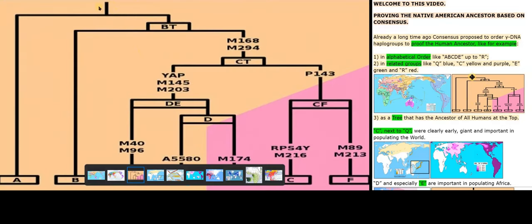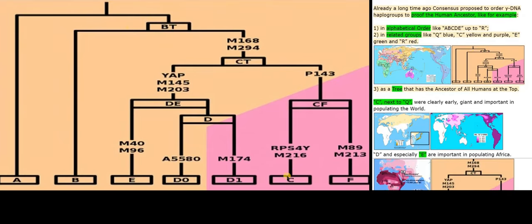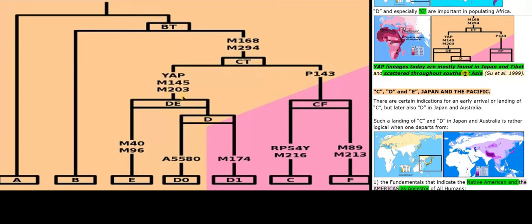C, next to Q, were clearly early, giant and important in populating the world. D and especially E are important in populating Africa. YAP lineages today are mostly found in Japan and Tibet and scattered throughout Southeast Asia (Su et al. 1999). C, D and E — Japan and the Pacific.